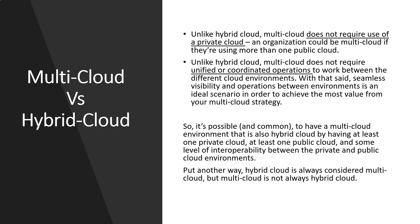There is sometimes confusion about the difference between multi-cloud and hybrid cloud. Unlike hybrid cloud, multi-cloud does not require use of a private cloud — it may or may not have a private cloud in its setup. An organization could be multi-cloud simply by using more than one public cloud, for example AWS and Azure. But in hybrid cloud, you need a private cloud as part of it. Also unlike hybrid cloud, multi-cloud does not require unified and coordinated operations between different cloud environments.